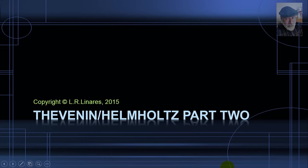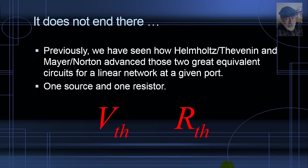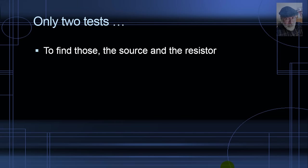Let's have a second conversation on the Thevenin-Helmholtz equivalent circuits. Previously, we've seen how Helmholtz, Thevenin, Meyer, and Norton came up with this wonderful idea of replacing a linear circuit with a simplifying equivalent circuit that has only one source and one resistor, V_TH and R_TH for the Thevenin equivalent. To find the value of that source and that resistor, we need only two tests.